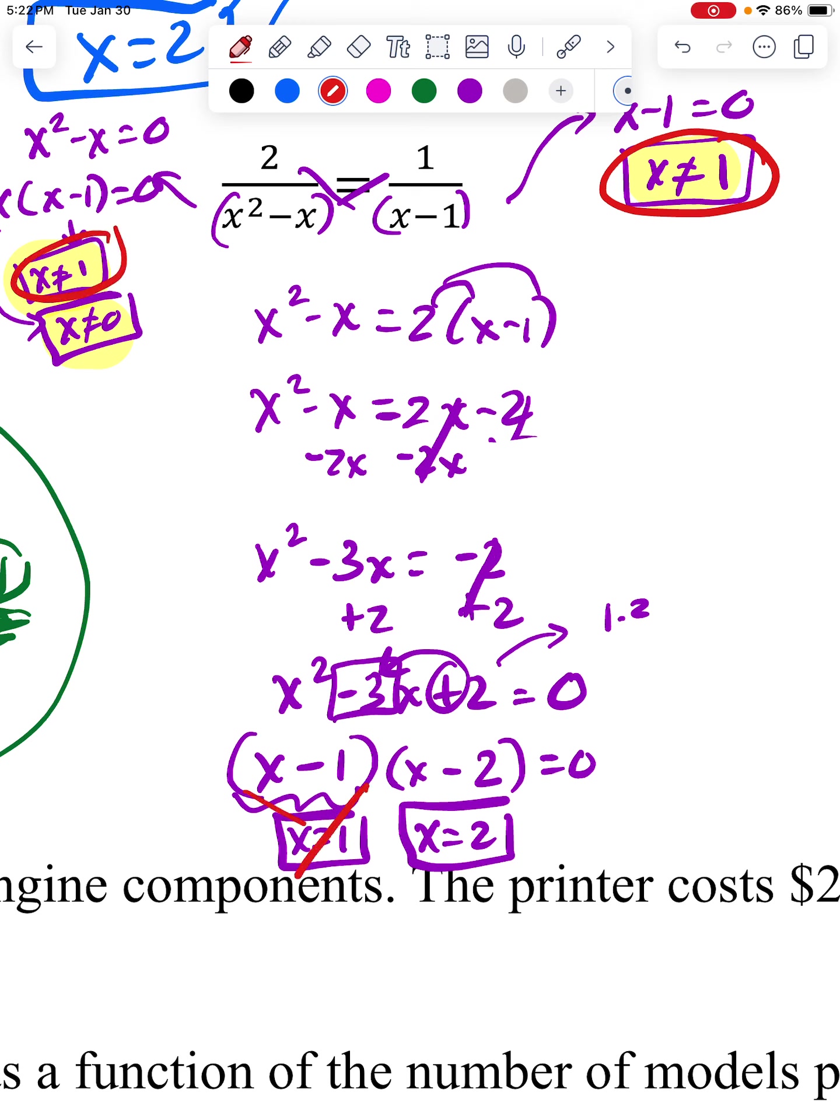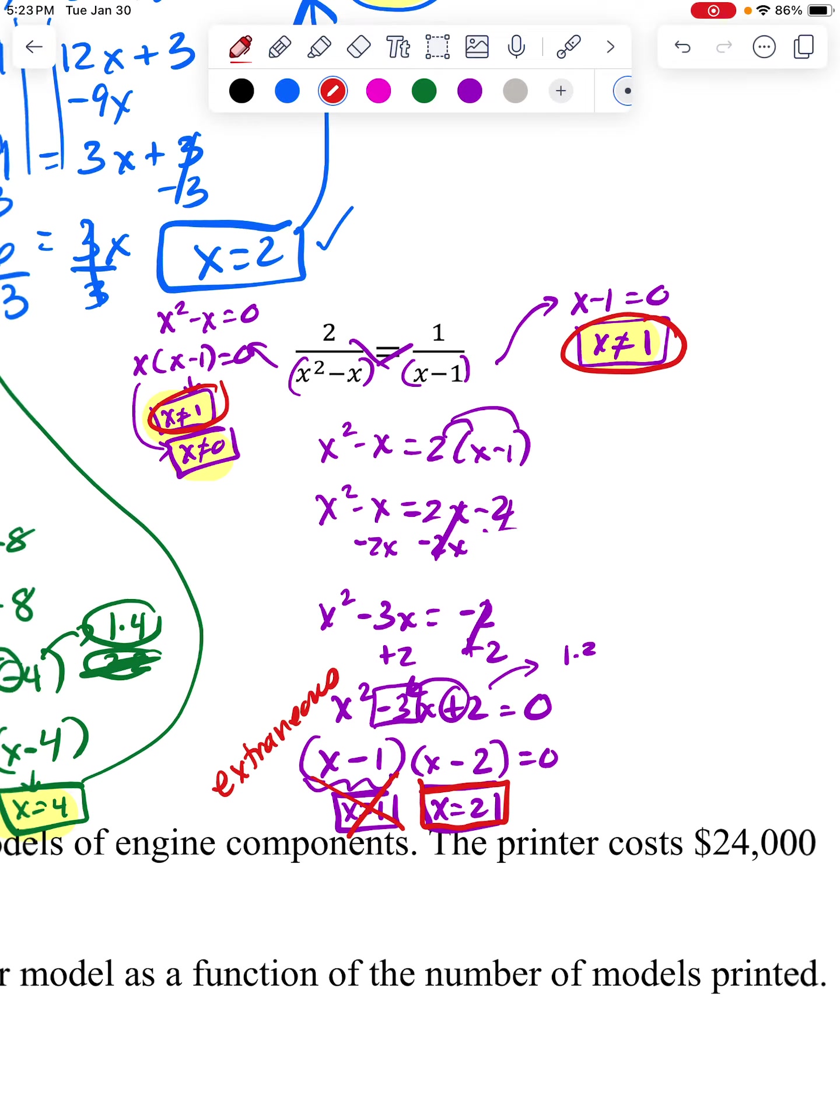So this is not a legitimate answer. It's what we call extraneous. It's like an extra one that we can't really use mathematically. So if you're doing this on a quiz, you're going to be having all the work shown, and you're going to see that answer, but you're going to cross it off like I did, and this is going to be the only legitimate usable x value that works.